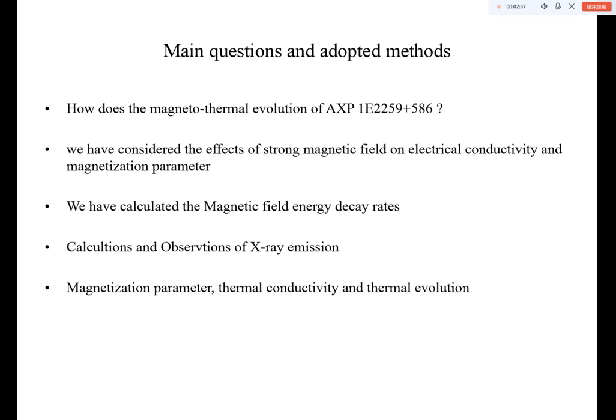we implement realistic conductivity profiles from the microphysics into the code to produce more reliable magnetic field decaying results. The crustal magnetic fields of neutron stars decay on different timescales in the forms of Hall drift and ohmic dissipation.